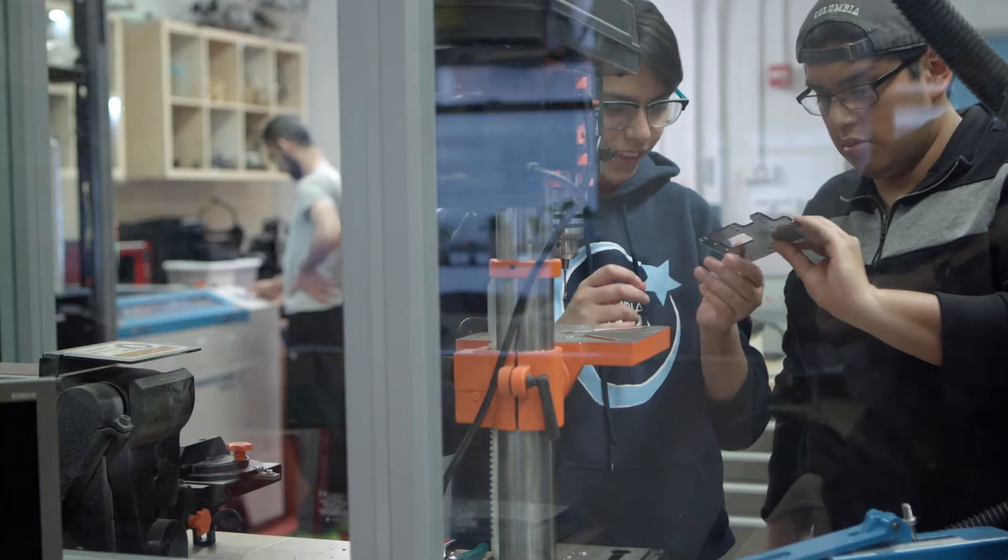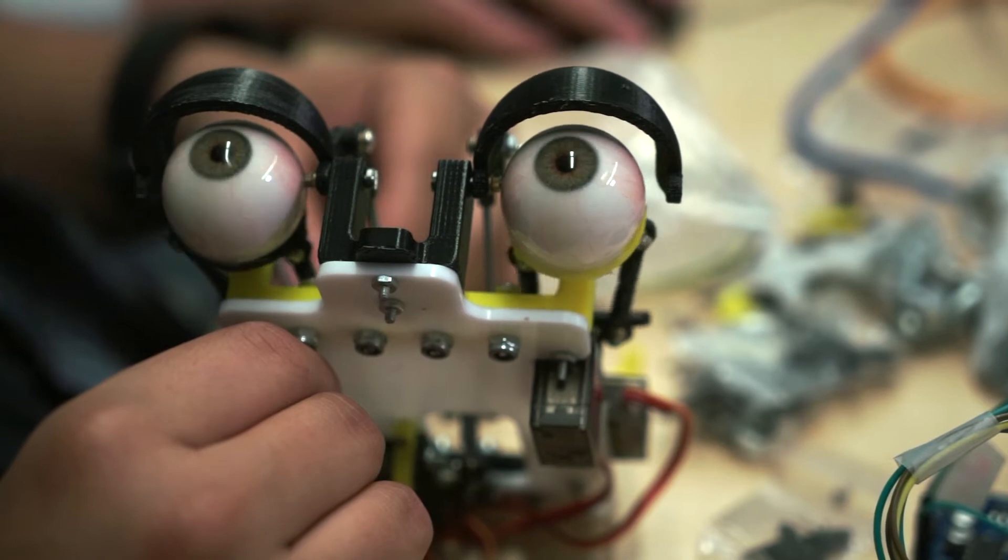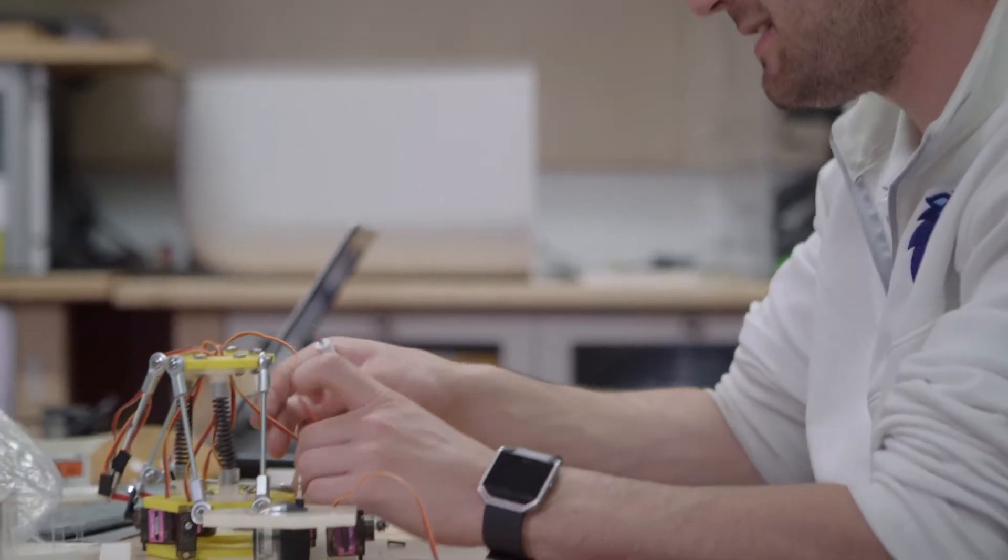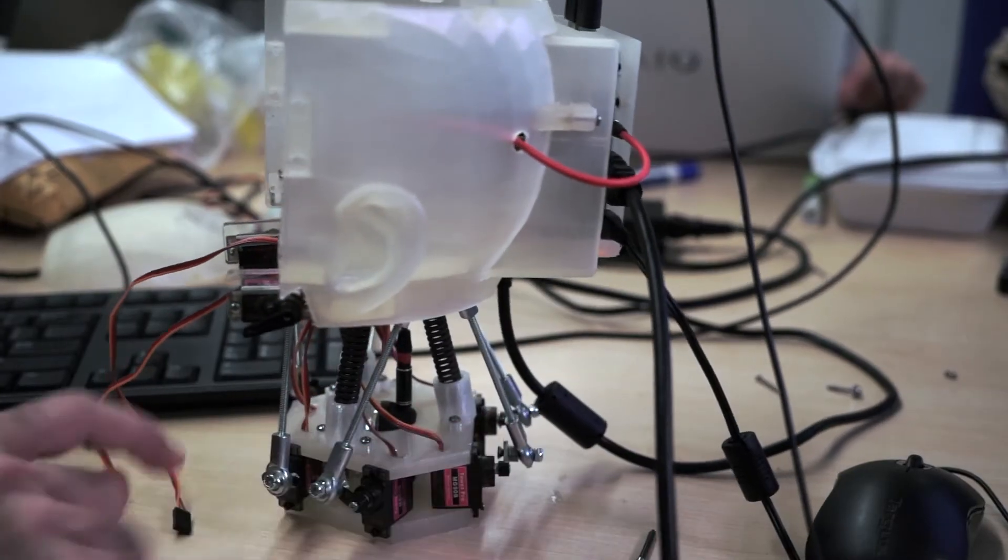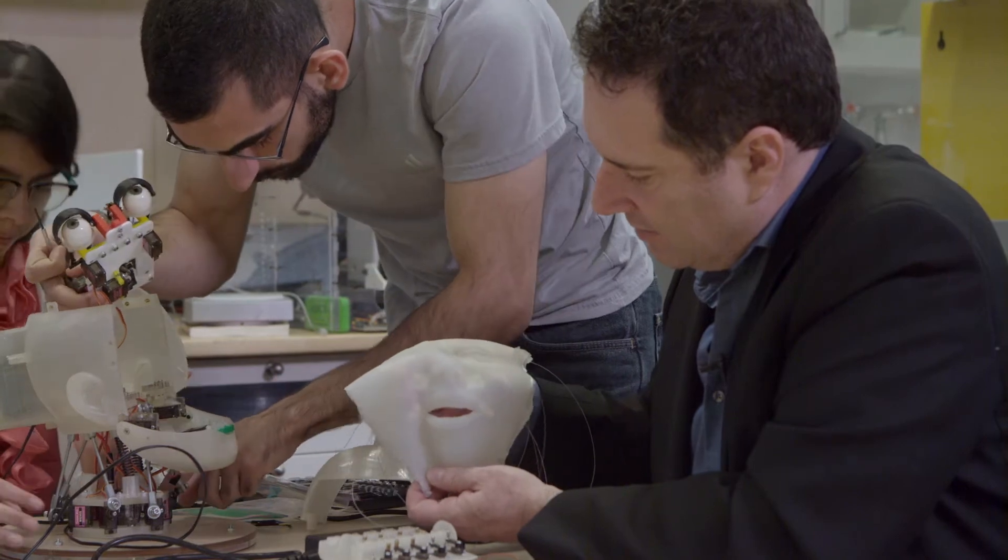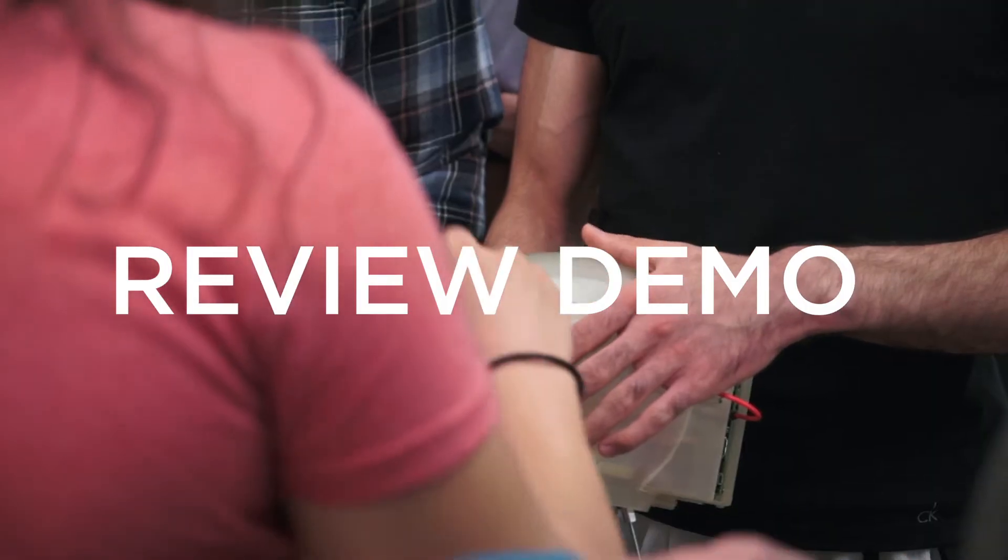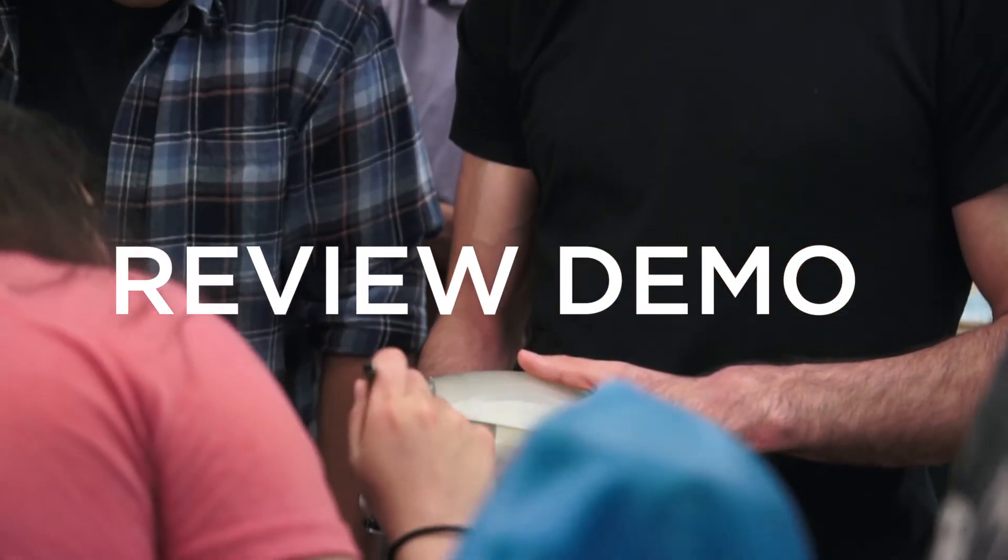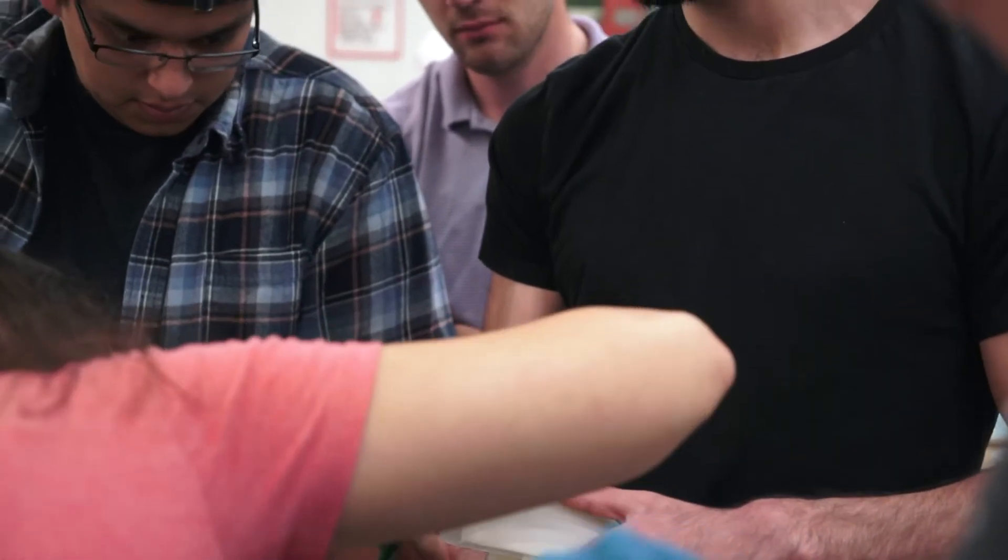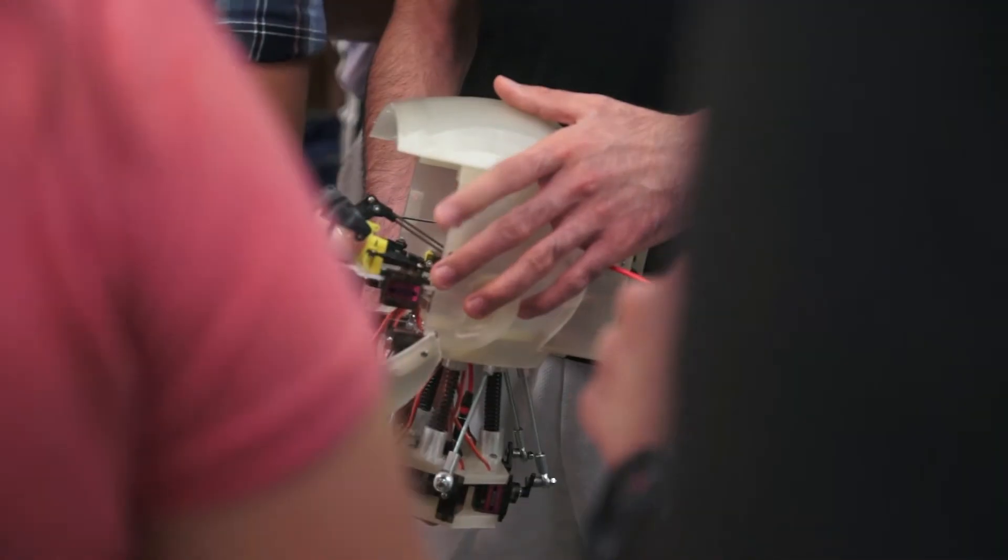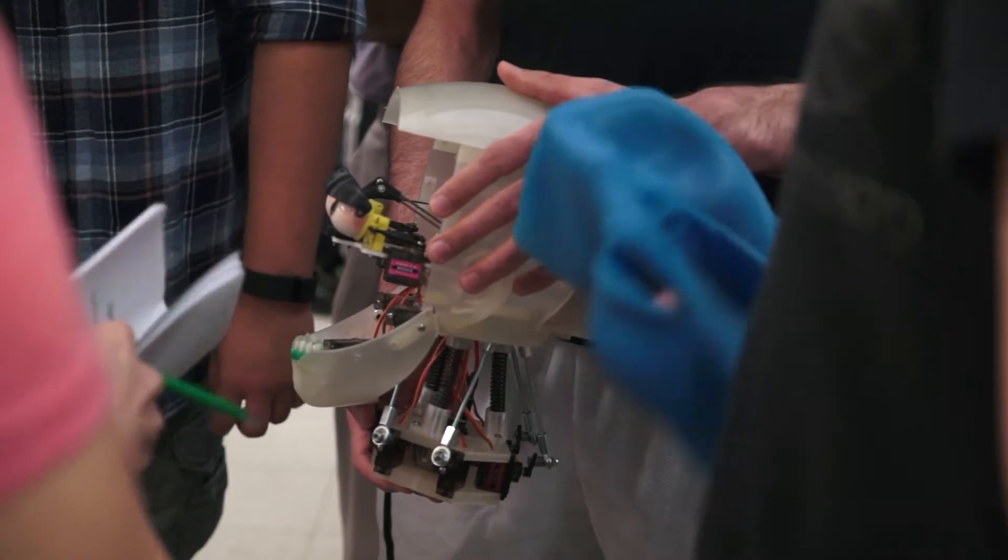Now we're getting to that phase of bringing everything together and making sure things work in conjunction, making sure the neck works with the eye and does what it's supposed to. We might not have it fully assembled but we'll be able to at least make things move, like even the eyelids move.